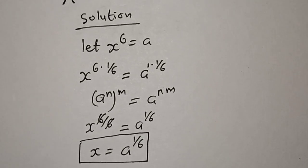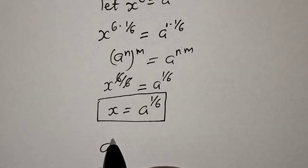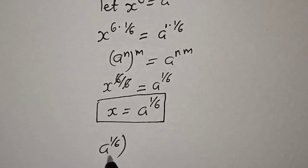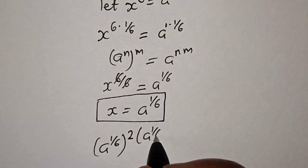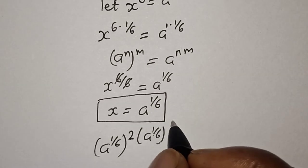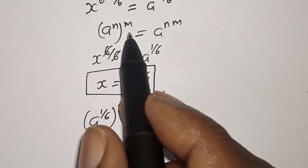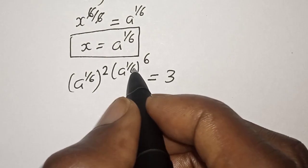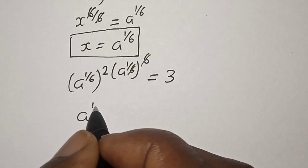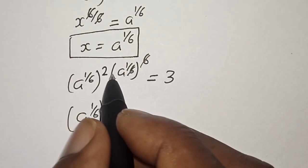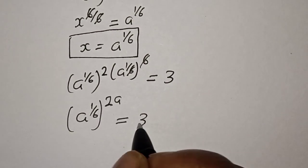So let's substitute this back into the original equation. That is, we have a raised to power 1 over 6 raised to power 2 multiplied by a raised to power 1 over 6 raised to power 6 is equal to 3. From the same rule, the inner exponents cancel.